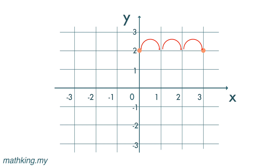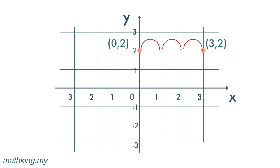Or we can use subtraction — we subtract the coordinates to get the answer. The y-coordinate is two for both because both points are two units above the x-axis. The x-coordinates are different: one is three, the other is zero. The difference between the x-coordinates, three minus zero, will give us the distance, which is three units.